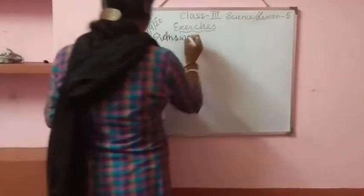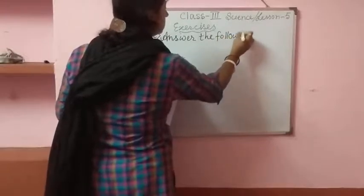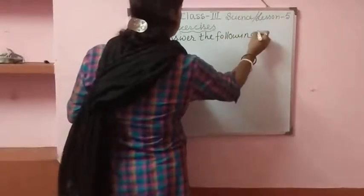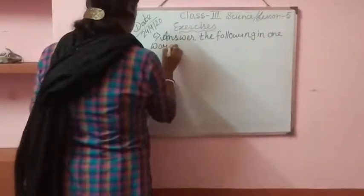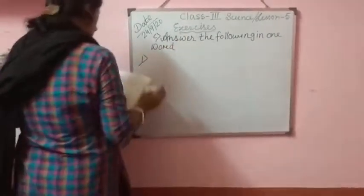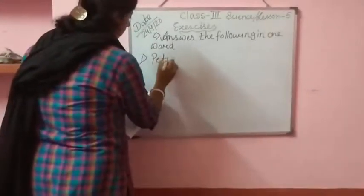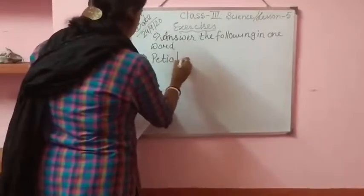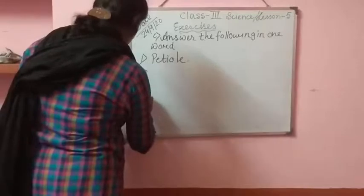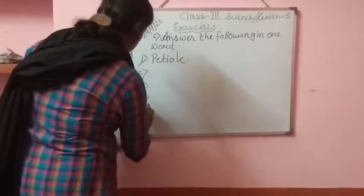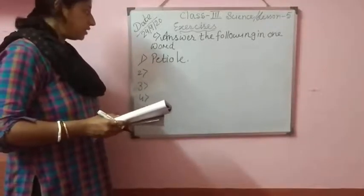Answer the following in one word. Number 1: answer will be petiole. Then number 2, number 3, number 4, and number 5. Everybody write in full sentence with question.